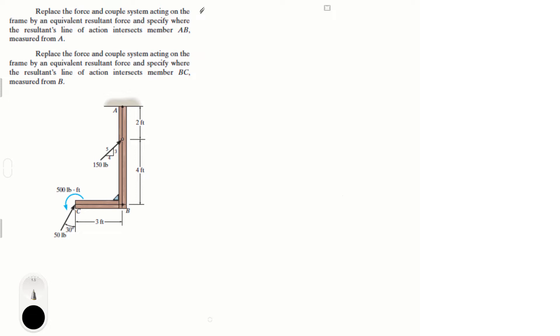So, first thing you gotta do in these problems is find the resultant forces. Sum of the forces in the X is equal to this force, which is 150 times 4 over 5, plus the X component of this force, which is this one given by 50 sin of 30 degrees. And when you add them all up this is equal to 145 pounds.